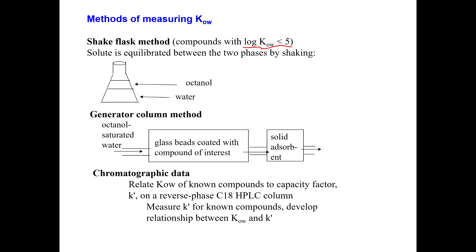But when you get to log KOW much greater than 5, all of your mass ends up in the octanol and there's almost nothing left in the water, so it becomes very difficult to measure KOW. The problem is the same problem we had with Henry's Law, where you have to start messing with the octanol to water ratio. You want to have more water per unit of octanol.